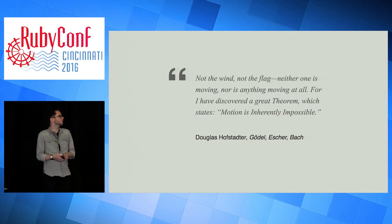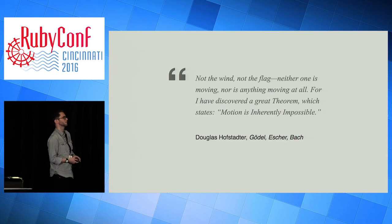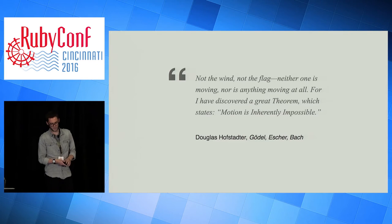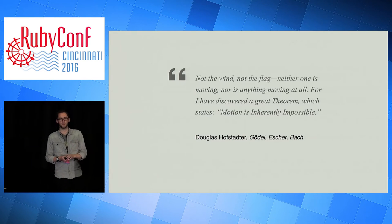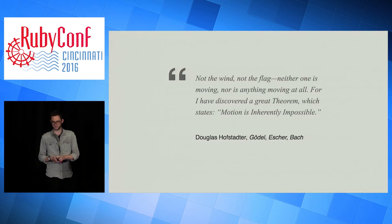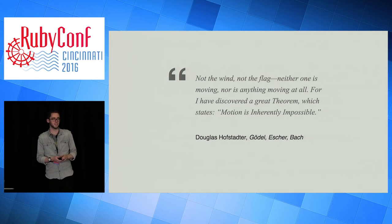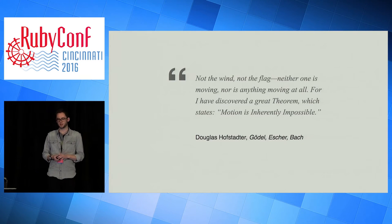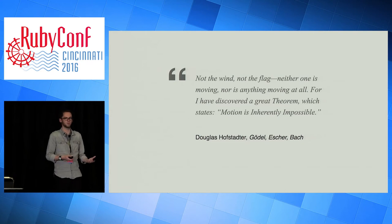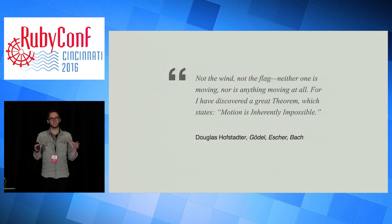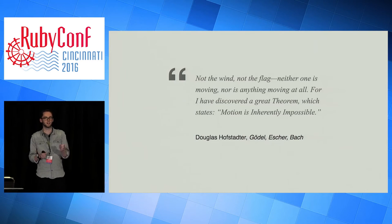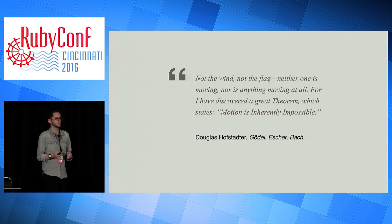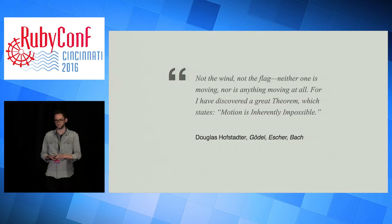Not the wind, not the flag. Neither one is moving, nor is anything moving at all. For I have discovered a great theorem which states motion is inherently impossible. These words are spoken by the philosopher Zeno in Douglas Hofstadter's classic book Gödel-Escher-Bach. And we kind of know that it's false - we can move around. But his idea that you can break something down into an infinite set of tiny pieces and do that recursively actually turns out to have a lot of important applications. And I'd like to talk to you about those today.